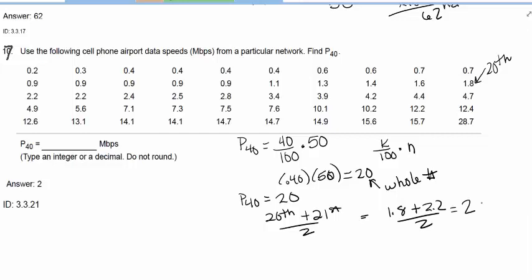So basically, I want the 40th percentile, which is 20 numbers. I want there to be 20 numbers below. So I need to take the 20th, average it with the next one, and that gets me. So the 40th percentile is 2. So a 2 would be right here in between the 1.8 and the 2.2.